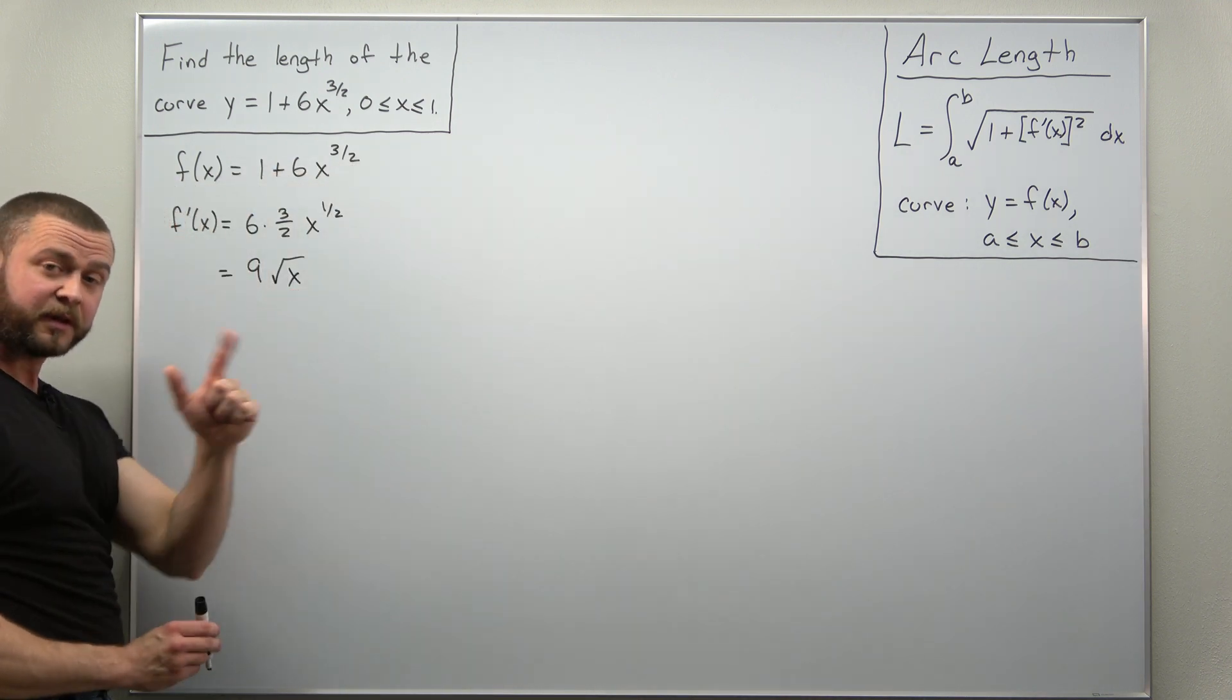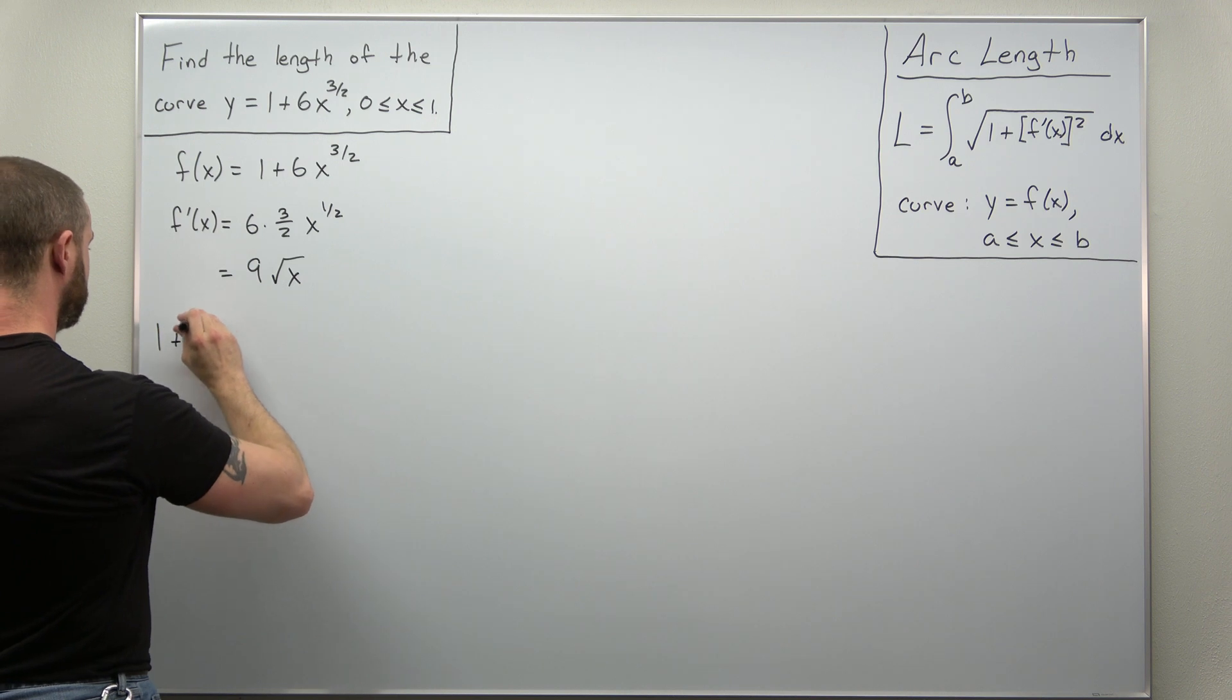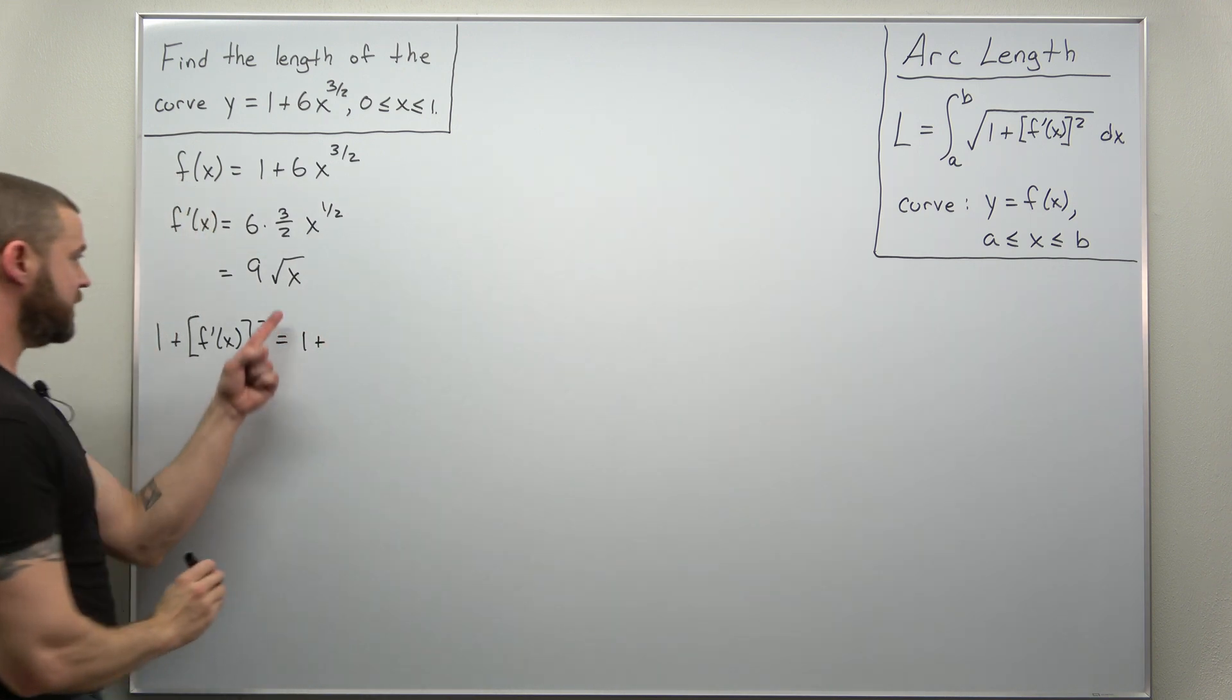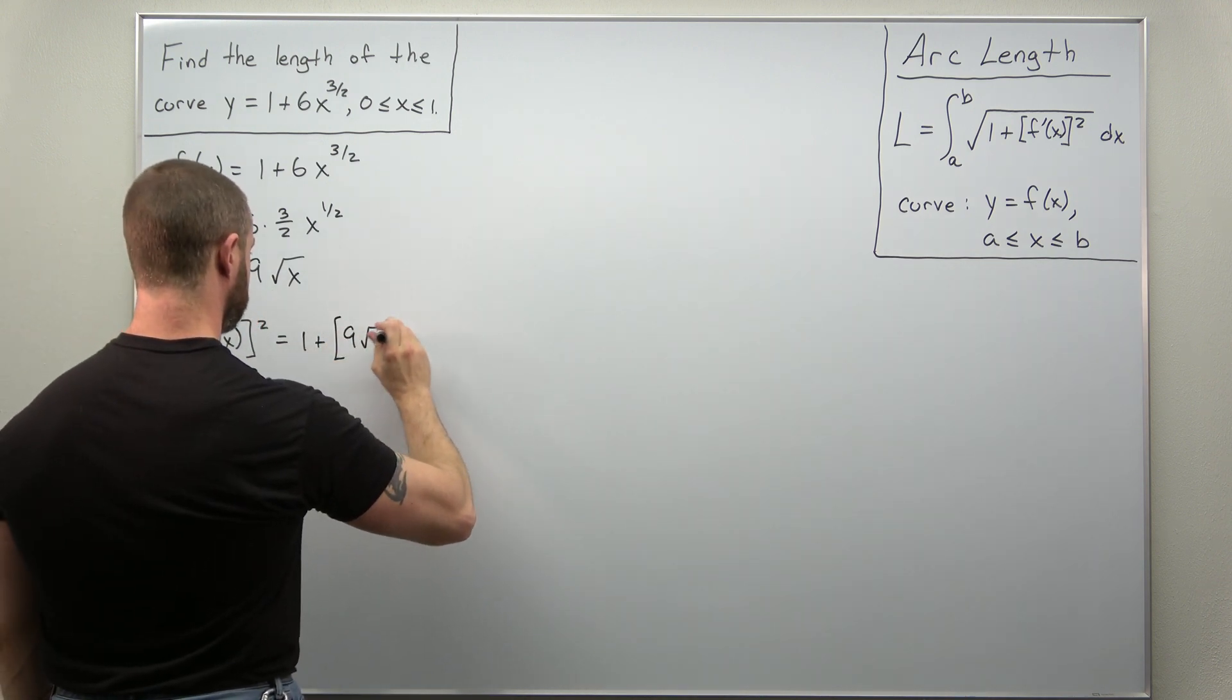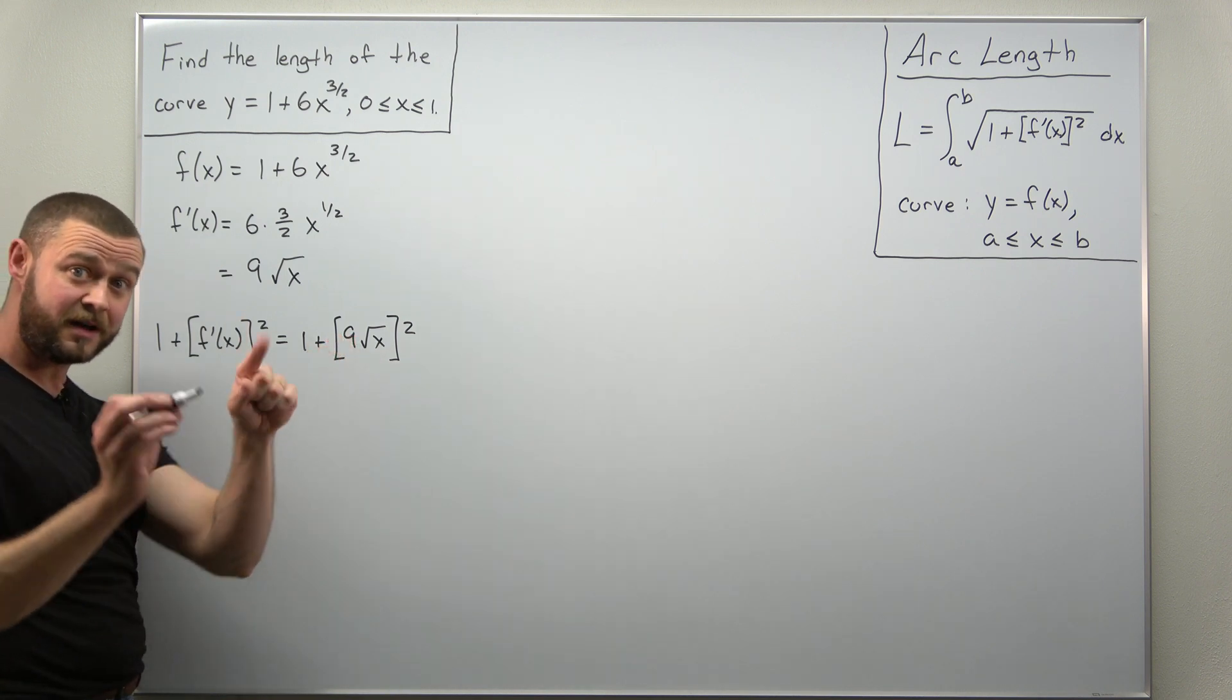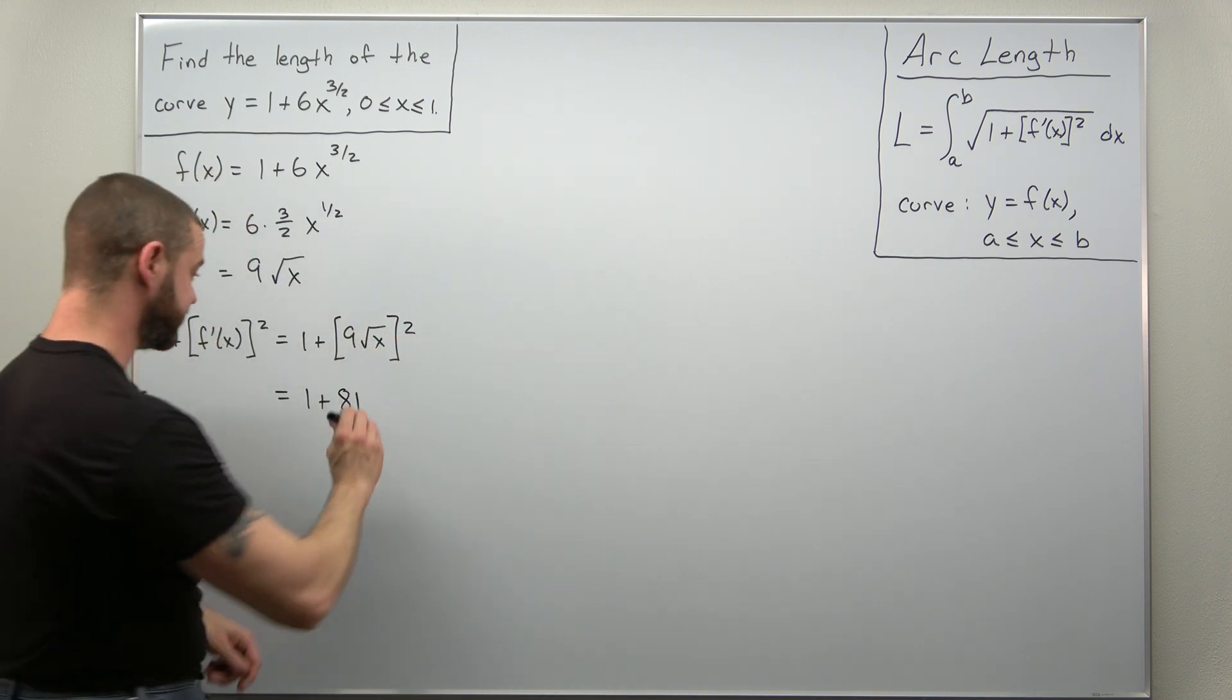So with this first derivative, let's go ahead and simplify the inside of the square root. So we're going to simplify 1 plus f prime squared. We have 1 plus and we're just going to square this. Just be careful with basic exponent rules. Remember, you want to square each factor in there because you're multiplying 9 by square root of x. It looks like we're going to get 9 squared as 81, and then square the square root, that cancels out to x.